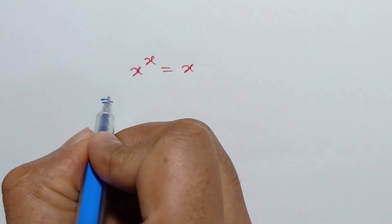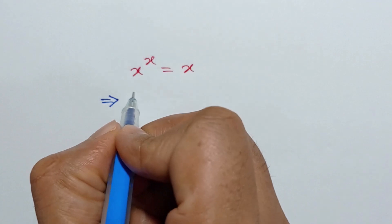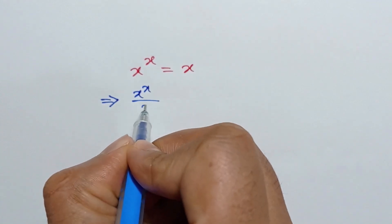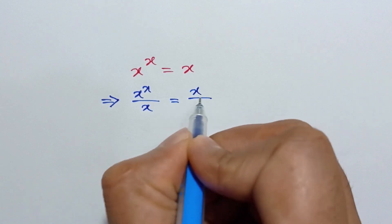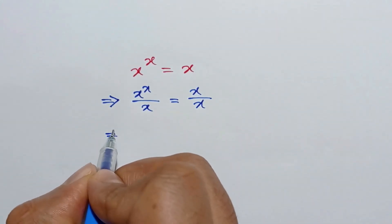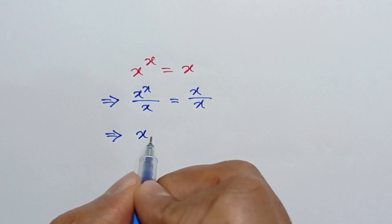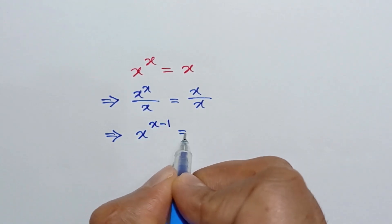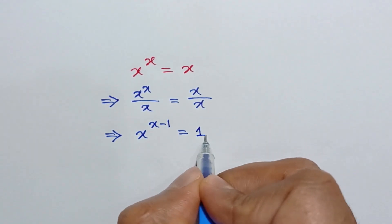Dividing both sides by x, we can write x to the power x over x is equal to x over x. Or it can be written as x to the power x minus 1 is equal to x over x, which is equal to 1.